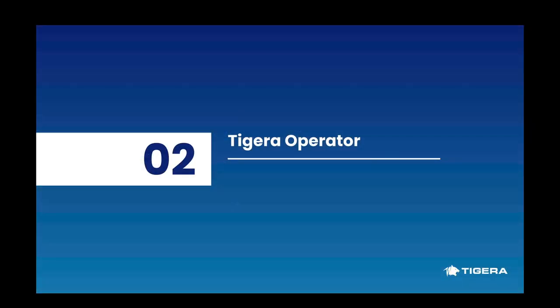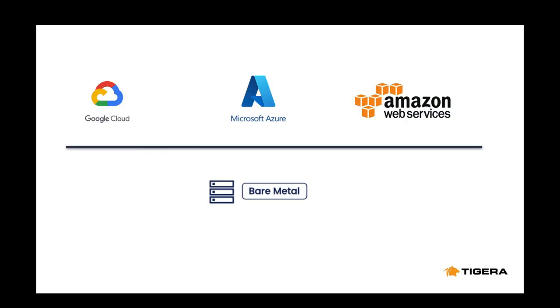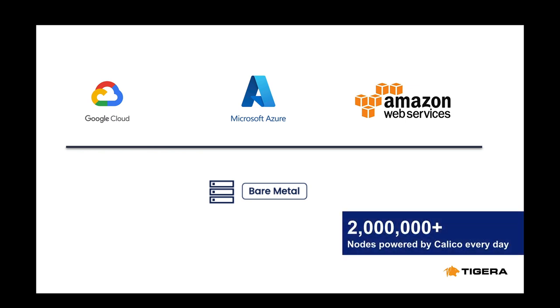Now let's start with our motivation behind promoting the Tigera operator as the recommended way to install Calico. A lot of people trust Calico for securing their environments. To support such a wide variety of platforms and needs, we had to develop a unified way to install and maintain Calico. And that is why we transitioned the Tigera operator, our enterprise installer, to support the Calico open source installation process.